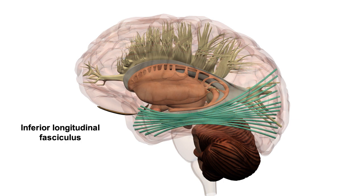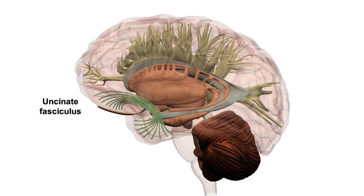The inferior longitudinal fasciculus connects the temporal lobe with the occipital lobe, with fibres running alongside the lateral walls of the inferior horn of the lateral ventricle. The uncinate fasciculus is a hook-shaped bundle that links the forward portions of the temporal lobe with the lower surfaces of the frontal lobe. It arises lateral to the amygdala and the hippocampus and is important in the function of the limbic system that controls emotion and mood.